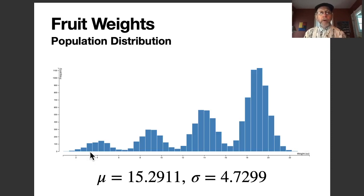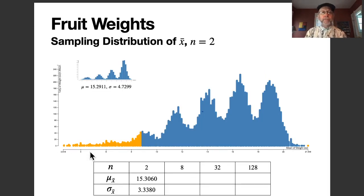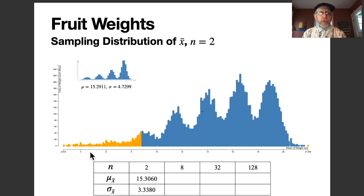The reason we use the mean and standard deviation is because they behave in predictable ways when looking at the sampling distribution of a sample mean. We're going to consider this as our population and look at samples of various sizes, examining how the means and standard deviations of those sampling distributions change.